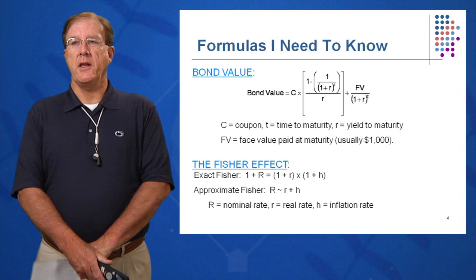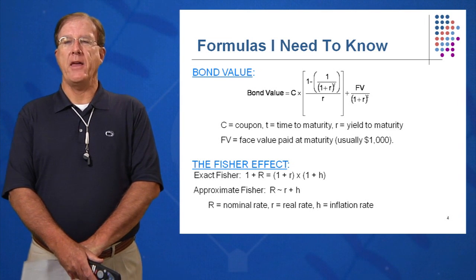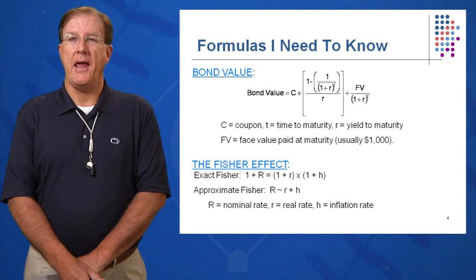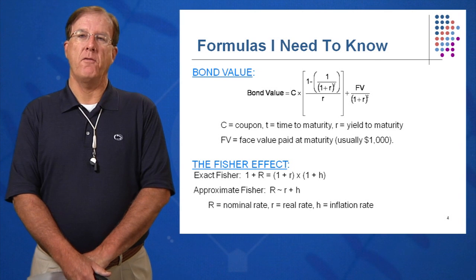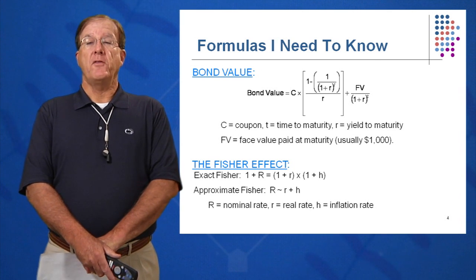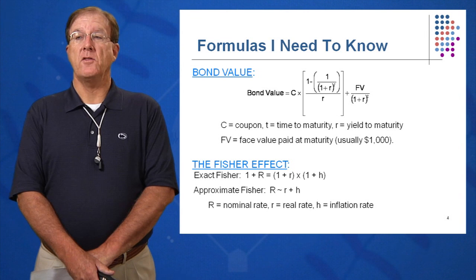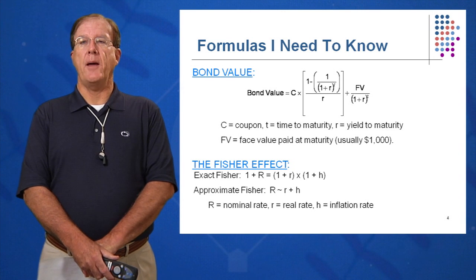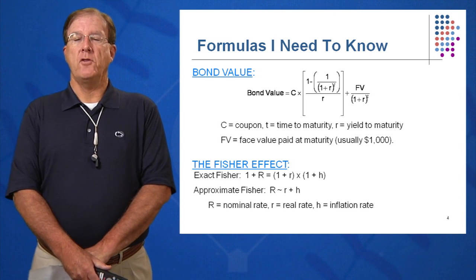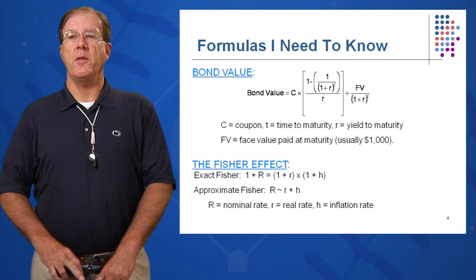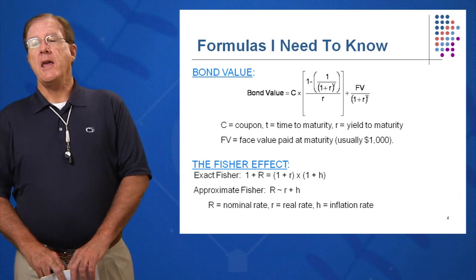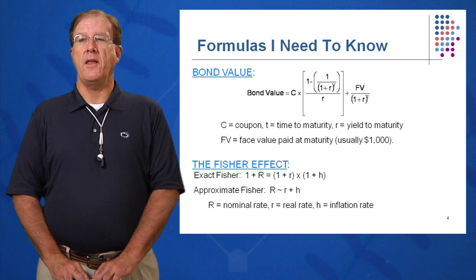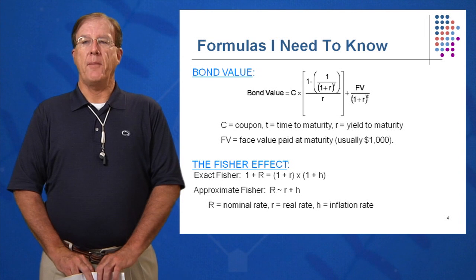Essentially there's one formula you need to know, and that is the bond formula. Bond value, or price of the bond, sometimes called PV bond — the present value of the bond today — is equal to C times (1 minus 1 over (1 plus R) to the T), all of that over R, plus face value over (1 plus R) to the T. You can see some familiar friends here from chapters 5 and 6. To value a bond you must know the present value annuity formula from section 6, and also the present value formula — face value over (1 plus R) to the T — from chapter 5.